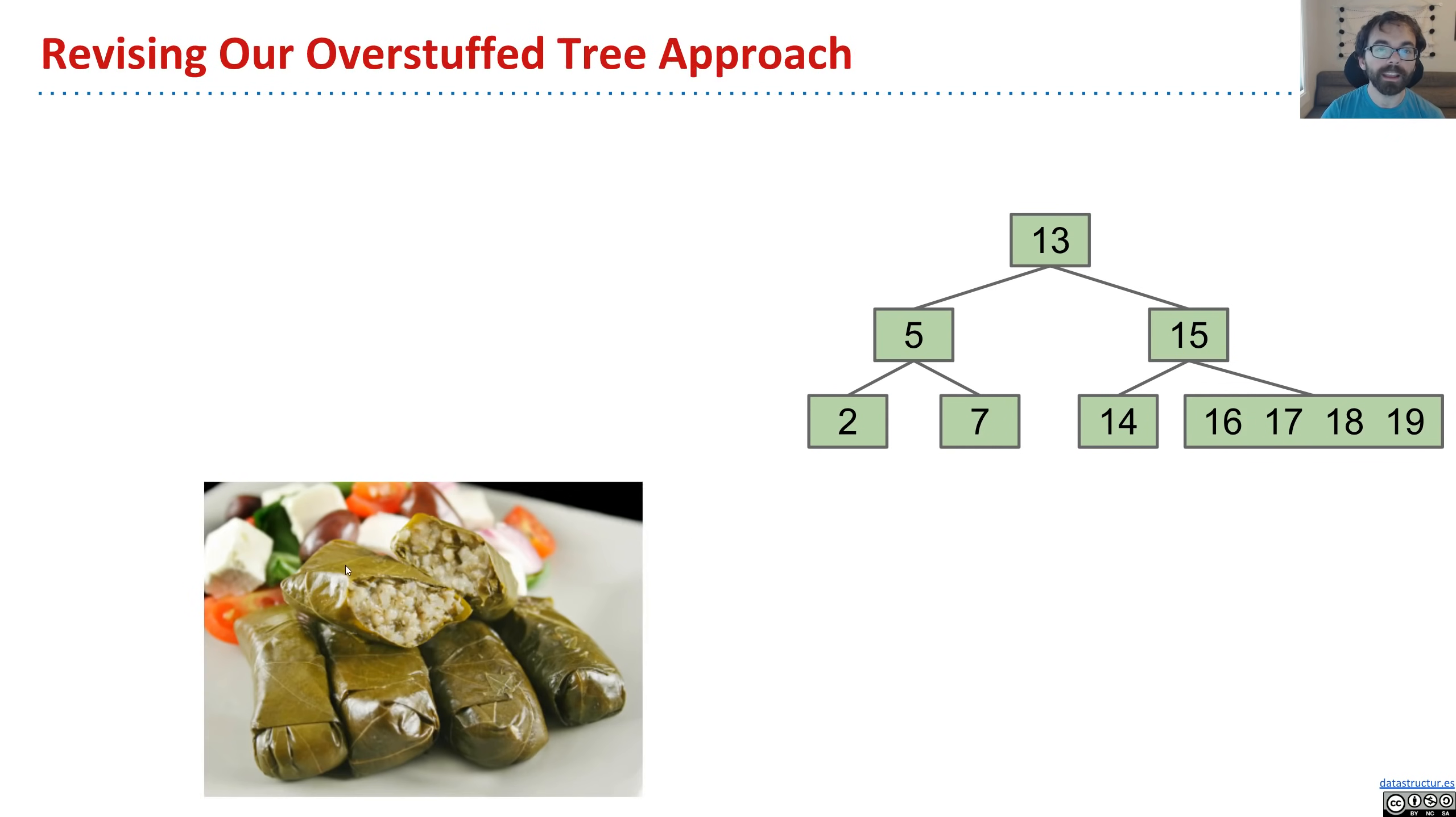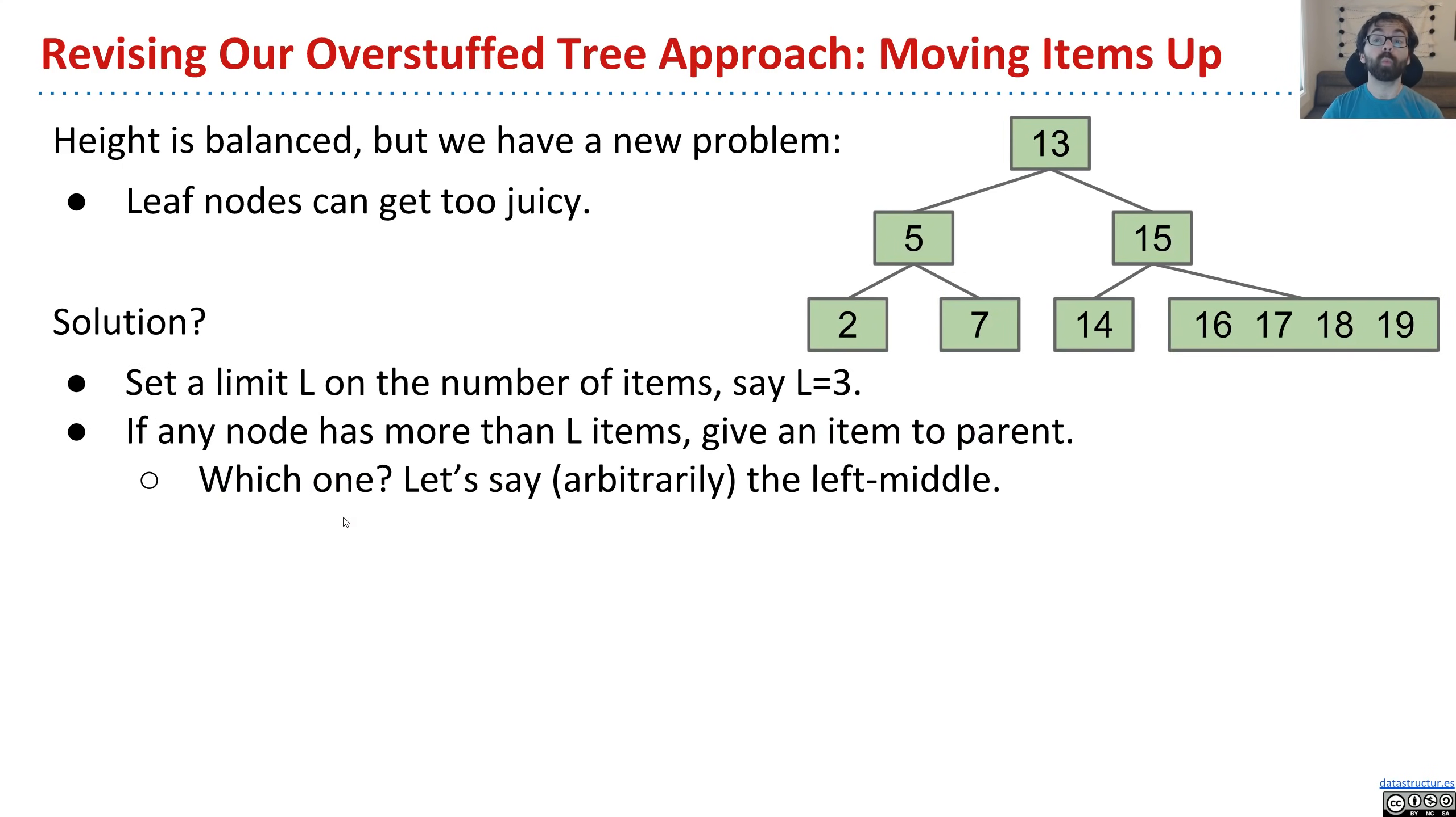Well, we're going to revise this idea of an overstuffed tree. So if our leaf nodes become too juicy, just so juicy that it's bursting, then what we're going to do is say there's a limit.